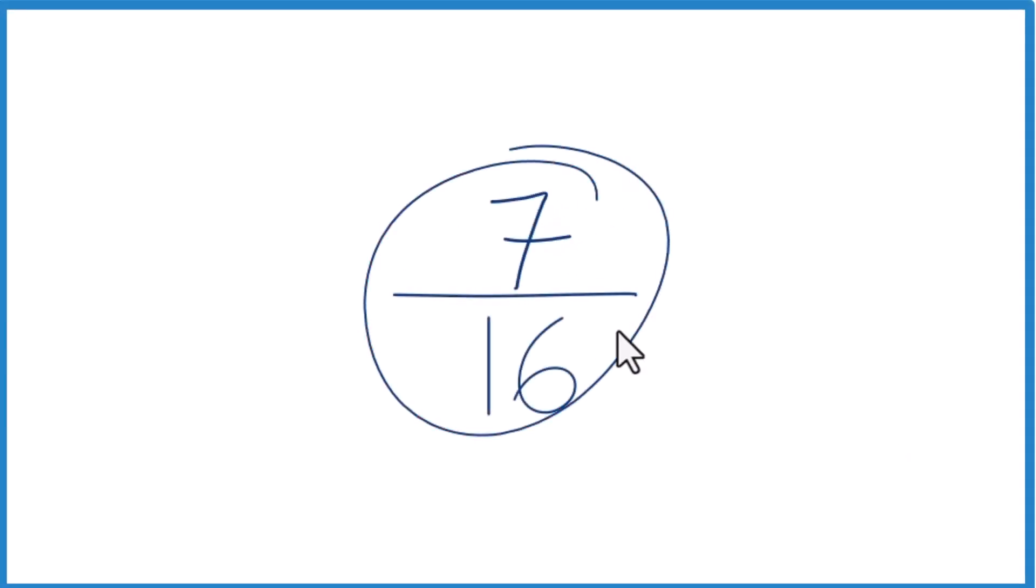Let's write the fraction 7 sixteenths as a decimal. And we know that 7, that's smaller than 16. So when we divide 7 by 16, we're going to get a number less than 1. That'll be our decimal.